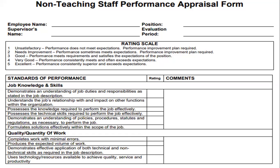This is the pro-forma which we use with employees. It includes: employee name, number, position, and supervisor. The evaluation period is noted, and the rating scale runs from unsatisfactory to excellent, one to five. Standards of performance include job knowledge and skills — for example, demonstrating job duties and responsibilities as stated in the job description.